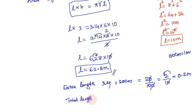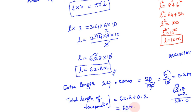Length of tarpaulin needed: 62.8 plus 0.2 equals 63 meters. So length of tarpaulin needed is 63 meters.